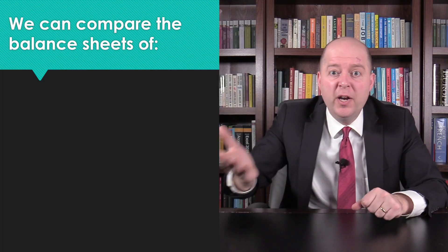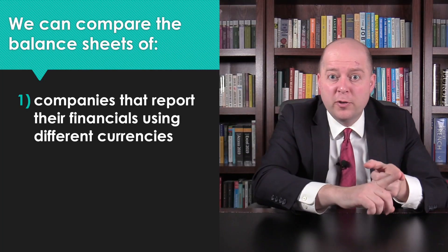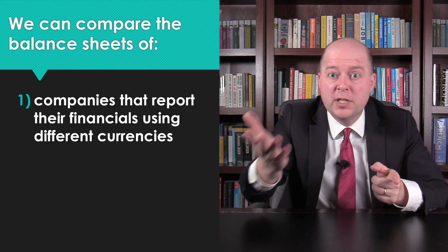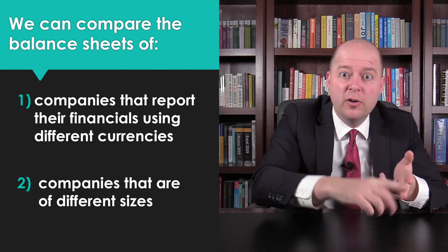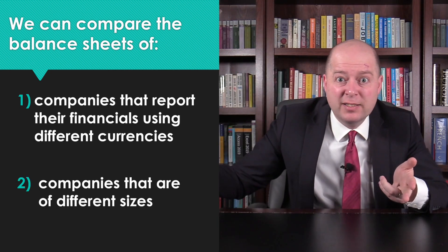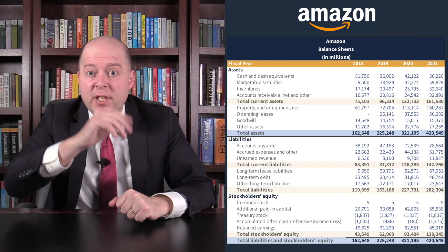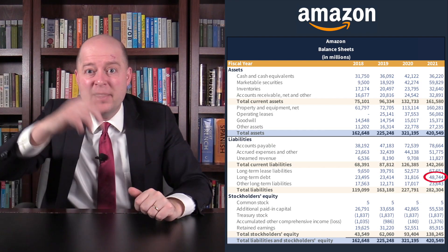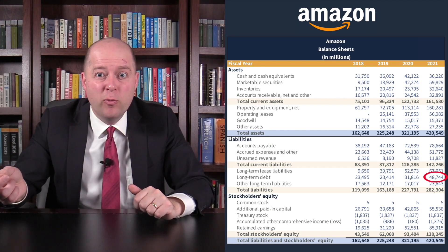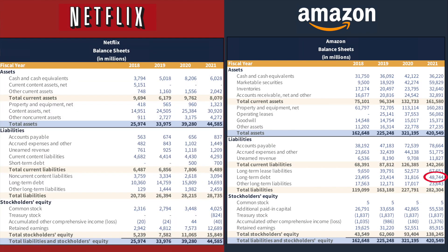We can compare the balance sheets of companies that report their financials using different currencies, or we can compare the balance sheets of companies that are of very different sizes. For example, Amazon had $48 billion of debt at the end of 2021, whereas Netflix had just $14 billion. Thus, Amazon appears to be a lot more highly leveraged than Netflix.